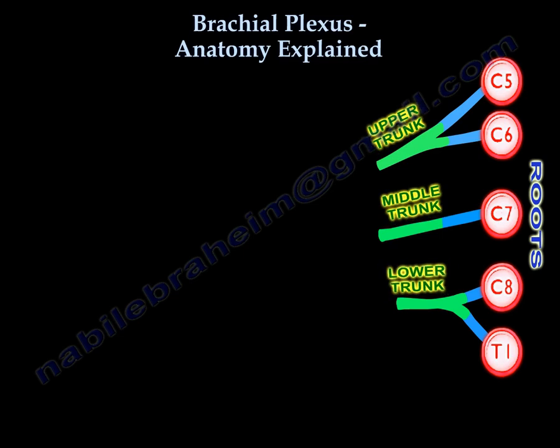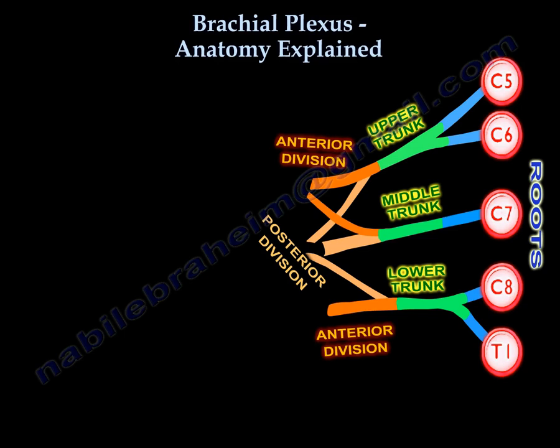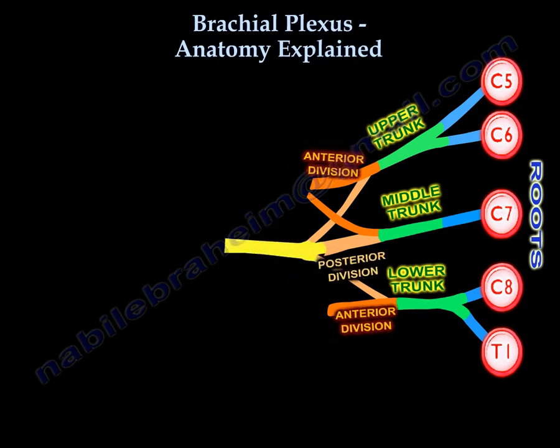Look at the ground and see the roots of a tree — after the roots, you find the trunk. Each of the three trunks will split into two divisions: an anterior division and a posterior division. The three posterior divisions unite to form the posterior cord.